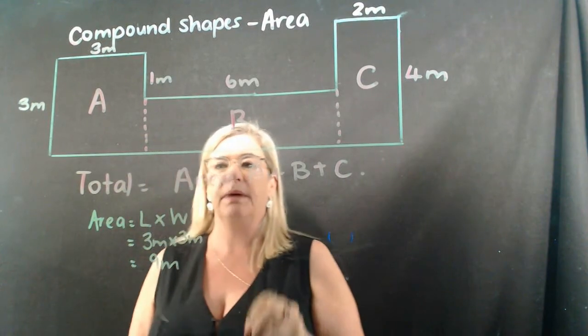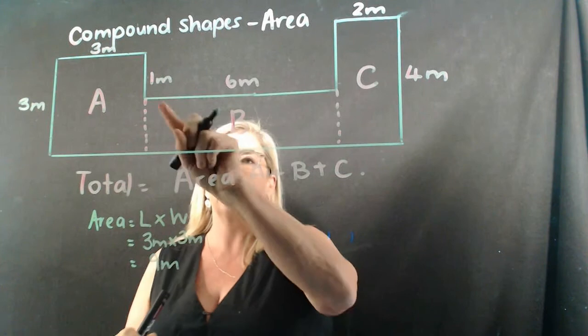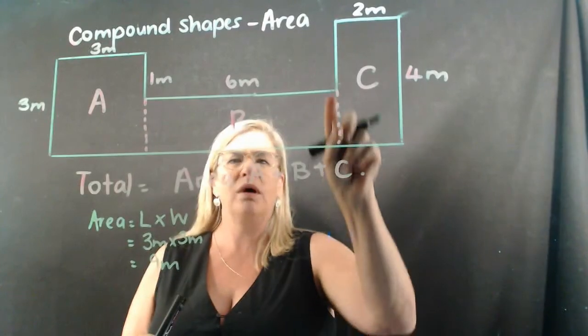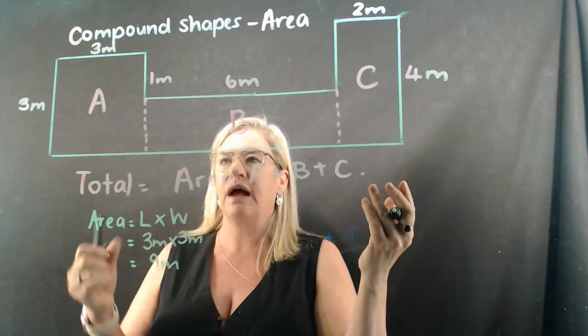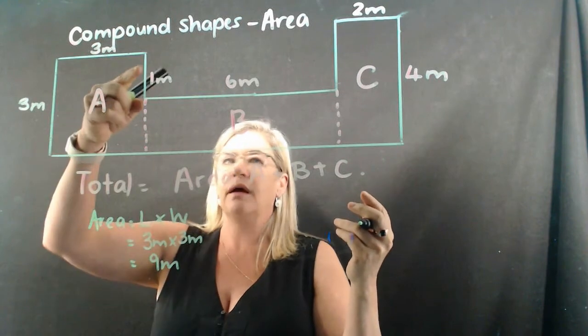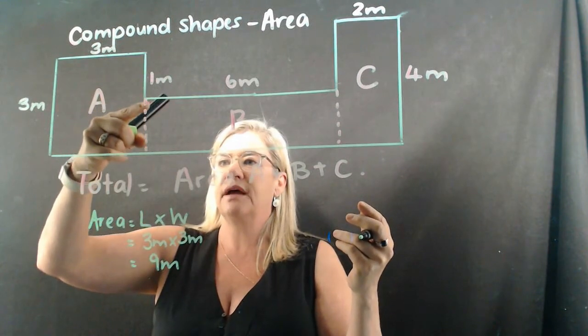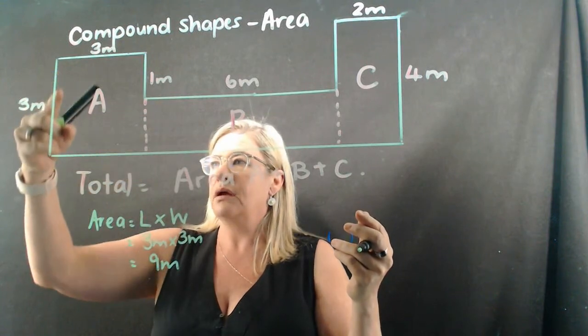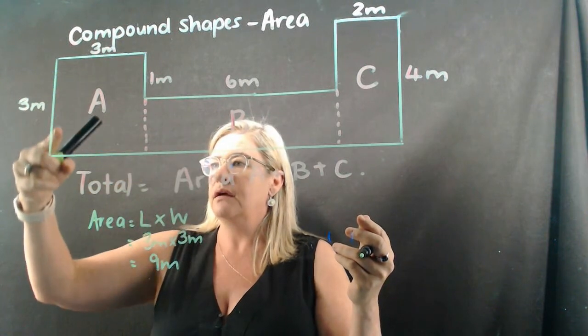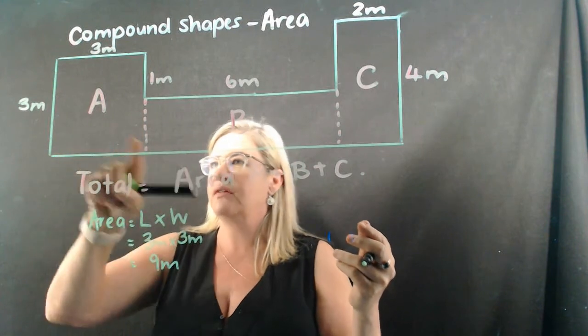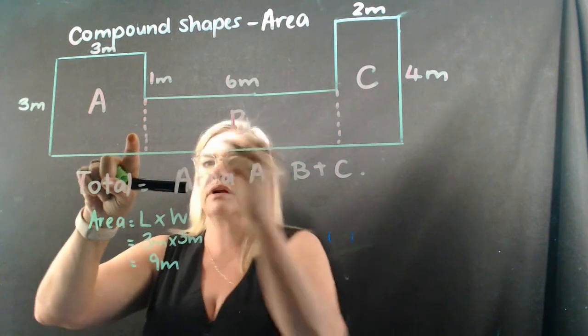Let's look at area B. It's a little bit more difficult. We know our length, but what is our width? There's no value there. Let's have a look here. We can work out that if it's one meter there, the rest would be two meters because it is parallel to this three meters.